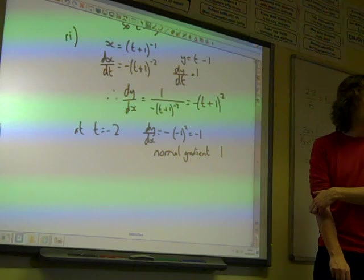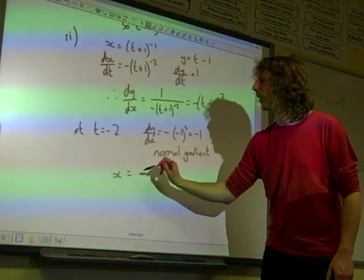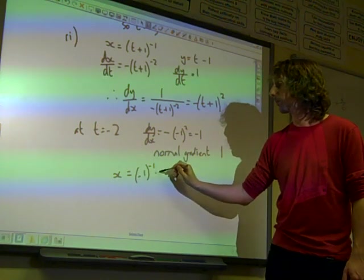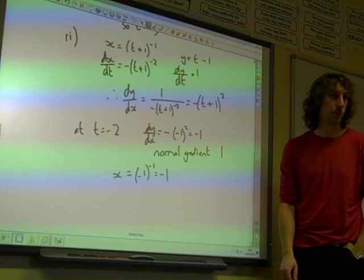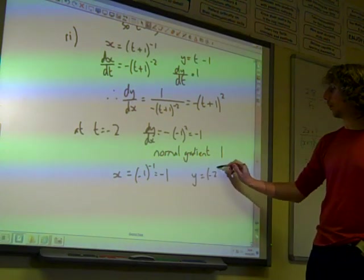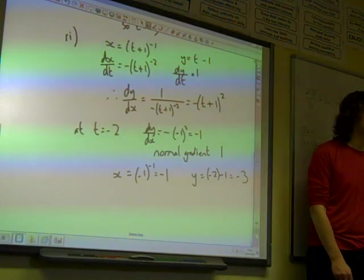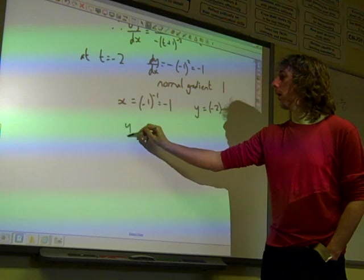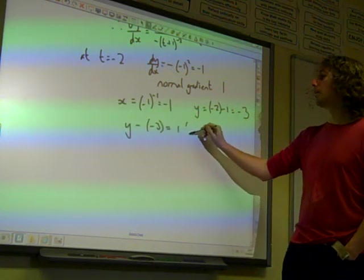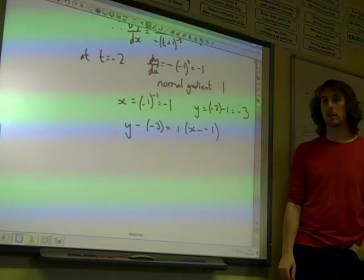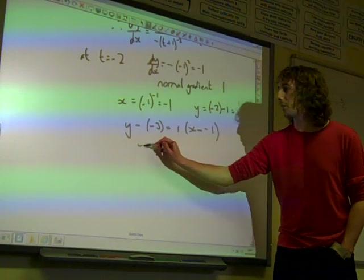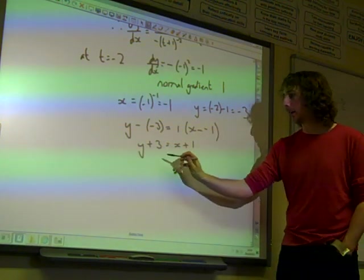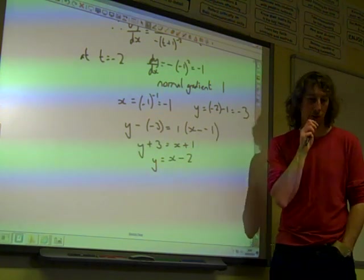We also need to know x and y. If t equals minus 2, x equals 1 over minus 2 plus 1, so minus 1 to the minus 1, which is negative 1. y is minus 2 take away another 1, which is minus 3. We're back to Core 1, was it? Where we found equations of straight lines using y minus y1 is m times x minus x1. This says that y plus 3 is x plus 1. And I think we would probably leave our answer as y equals x minus 2.